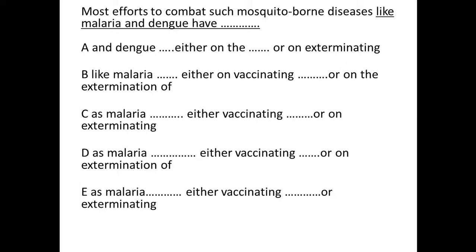Hi, my name is Mandeep. In this question, we'll use the elimination process to find the answer. If you compare the first few words, it says 'such as.' If you read the part before the underlined portion, it says 'most efforts to combat such mosquito-borne diseases as.' So 'such as' is the right construction — 'such like' and 'such and' are wrong, so eliminate A and B.